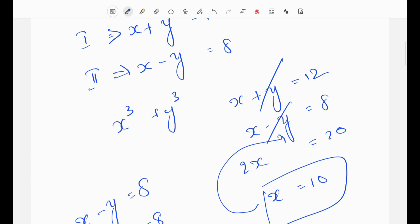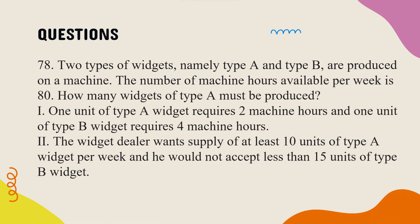Next problem. Two types of widgets, namely type A and type B, are produced on a machine. The number of machine hours available per week is 80. How many widgets of type A must be produced? Statement 1: 1 unit of type A widget requires 2 machine hours and 1 unit of type B widget requires 4 machine hours. Statement 2: The widget dealer wants a supply of at least 10 units of type A widget per week and would not accept less than 15 units of type B widget.